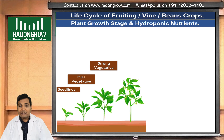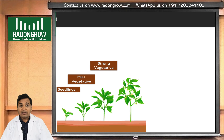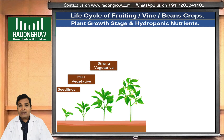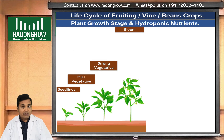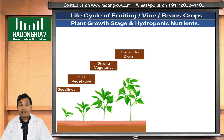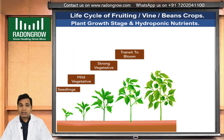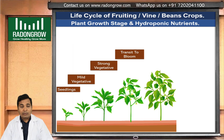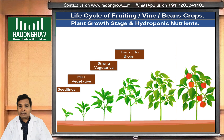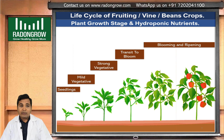But when a plant starts flowering — we can call it the transit to bloom stage — we will have to change the nutrient composition to get commercial production. For hobby purposes it may not be required, but to get a viable commercial production, we will have to change the nutrient composition when flowering starts.